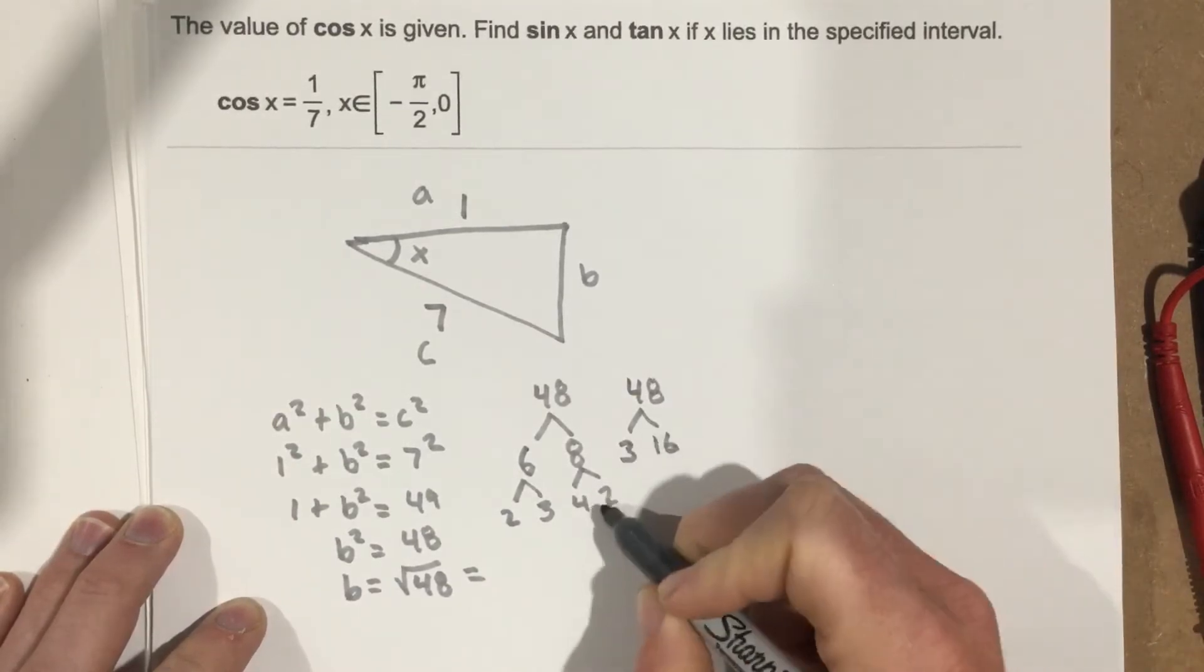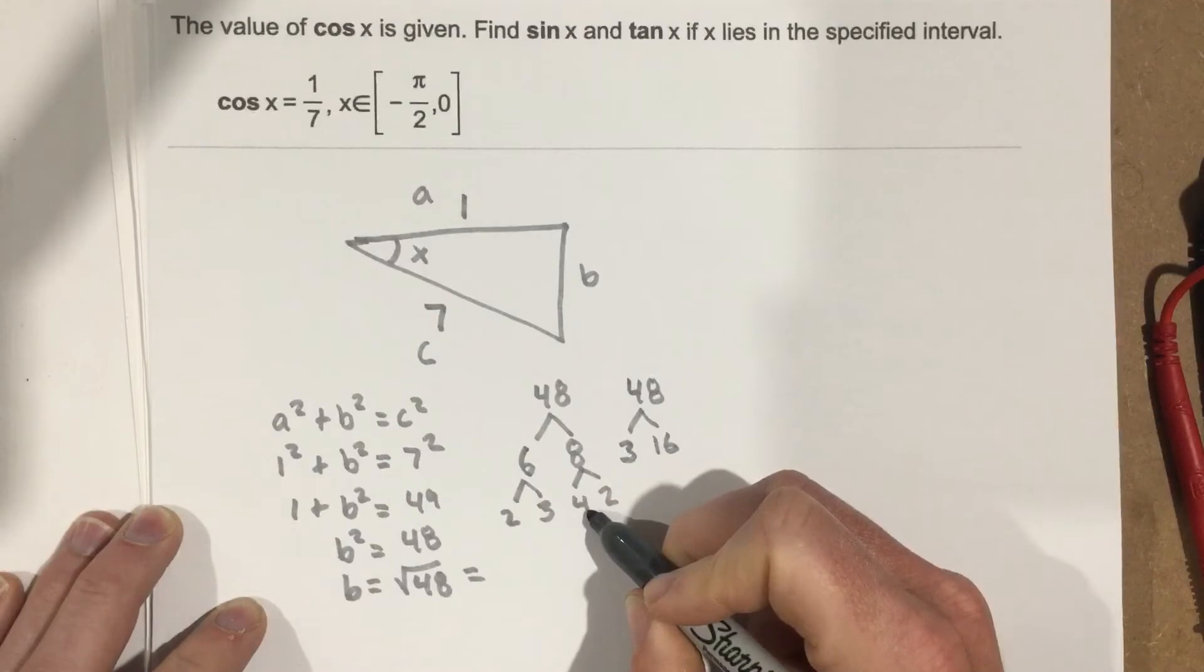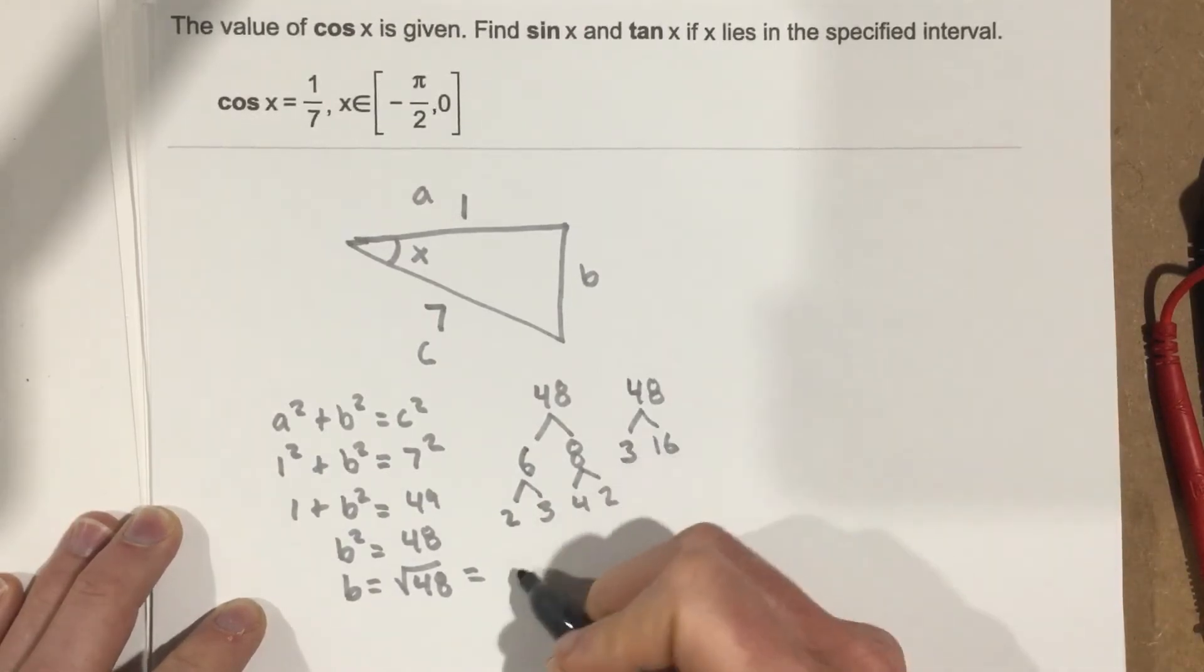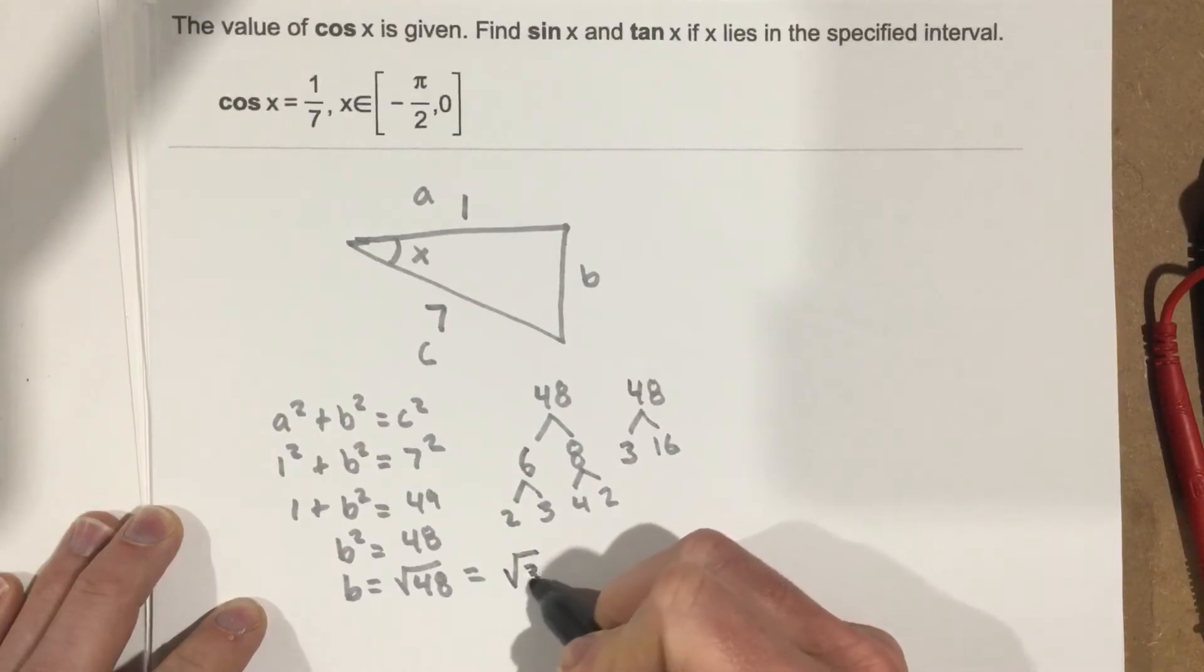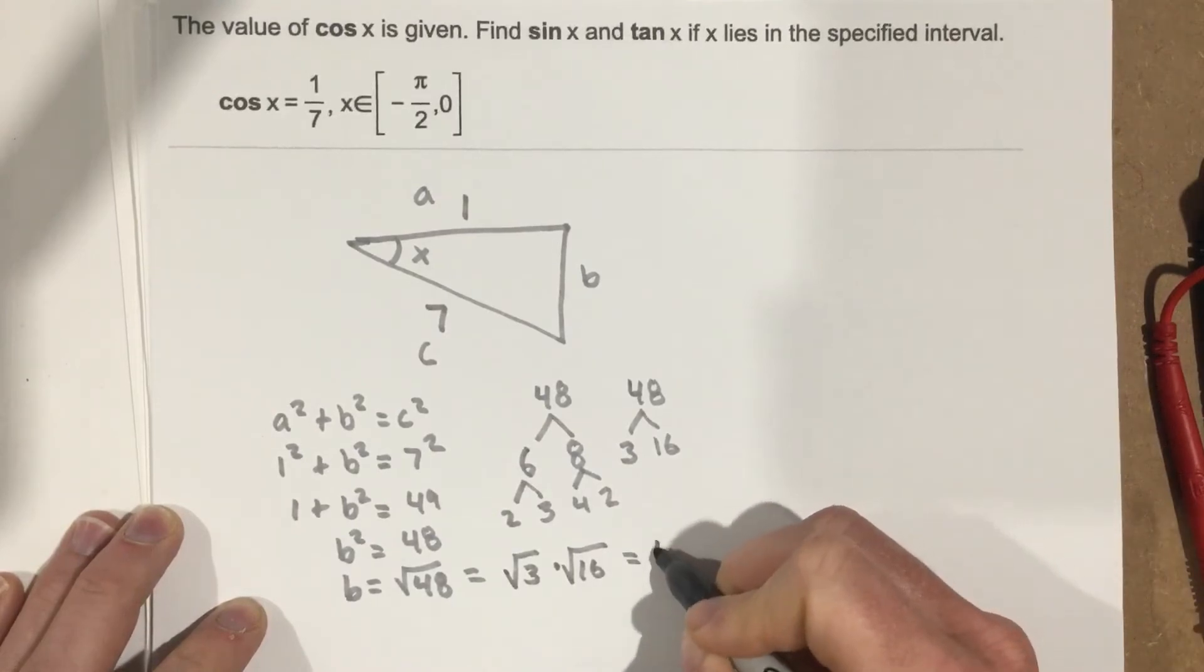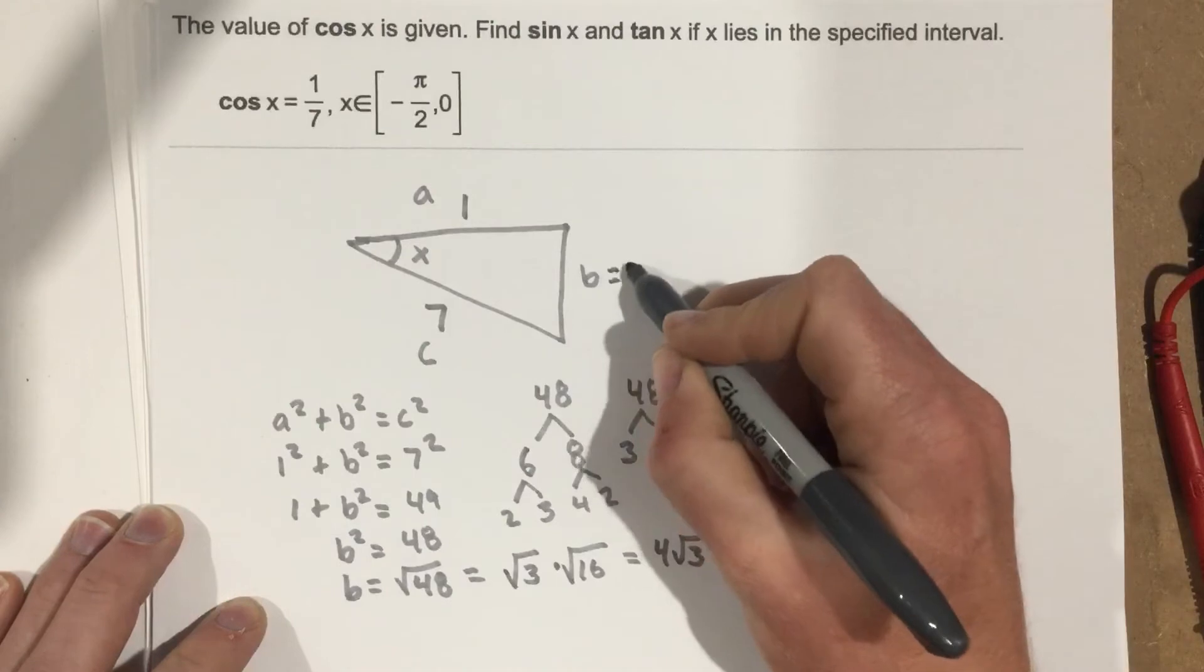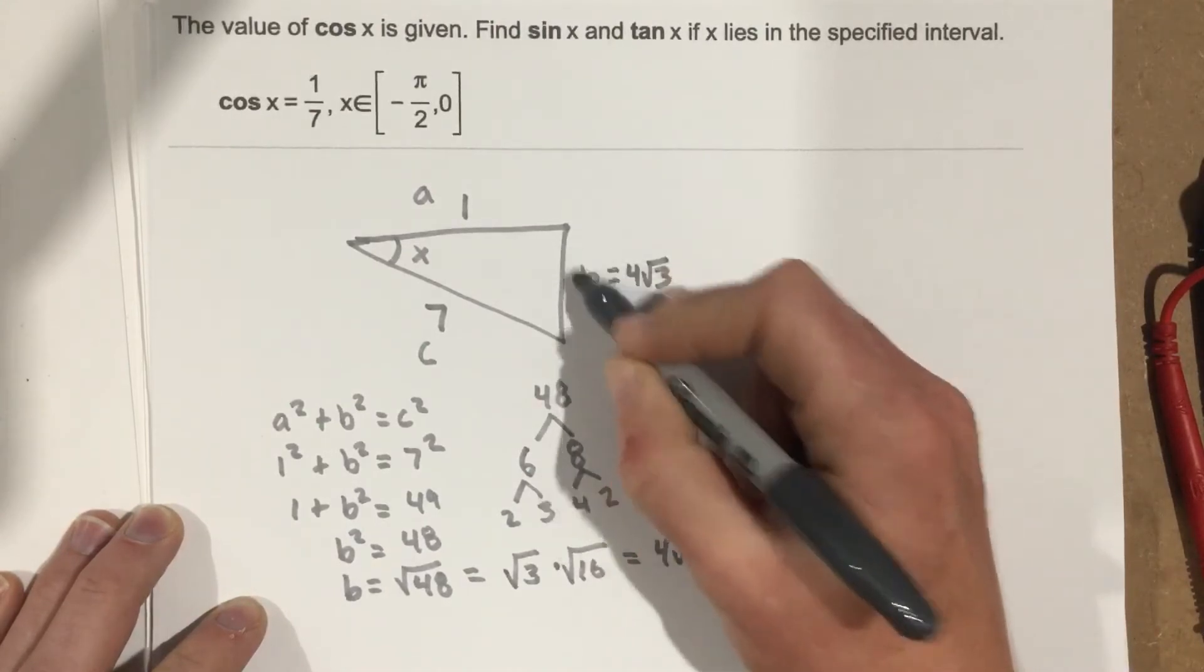Right? Because 2 times 2 is 4, times 4 is 16. So 16 and 3 is what 48 is. That makes it easy to write this as root 3 times root 16, which is, well, root of 16 is 4, so I end up with 4 root 3. So this, part B, is 4 root 3, the side B.